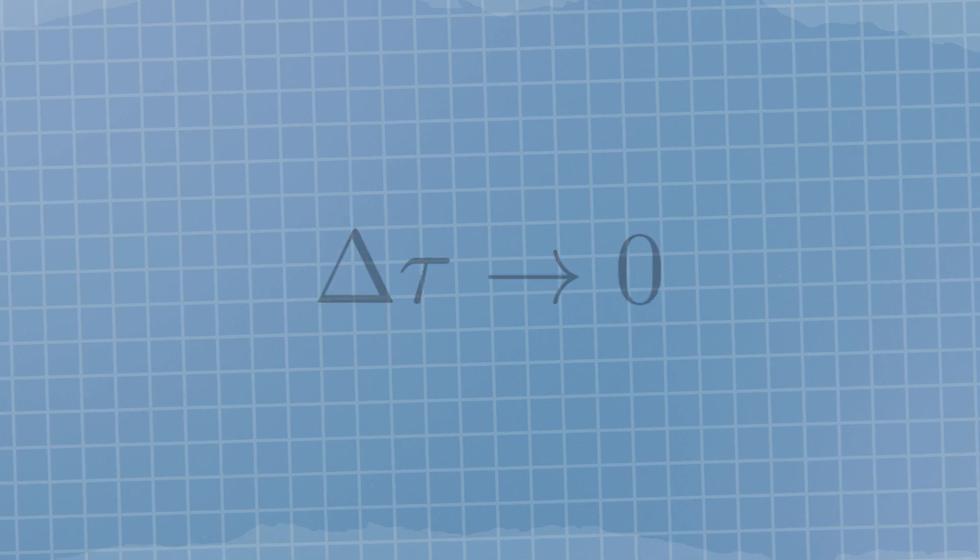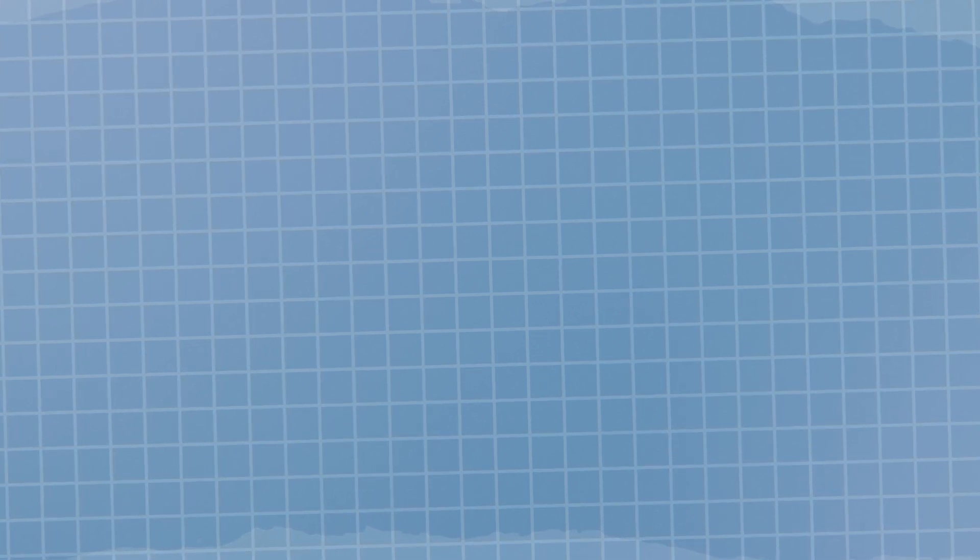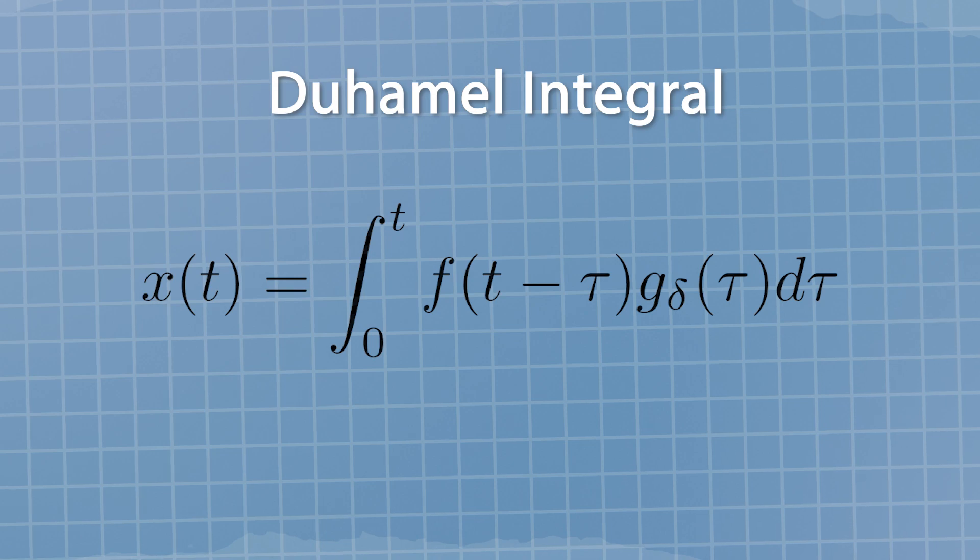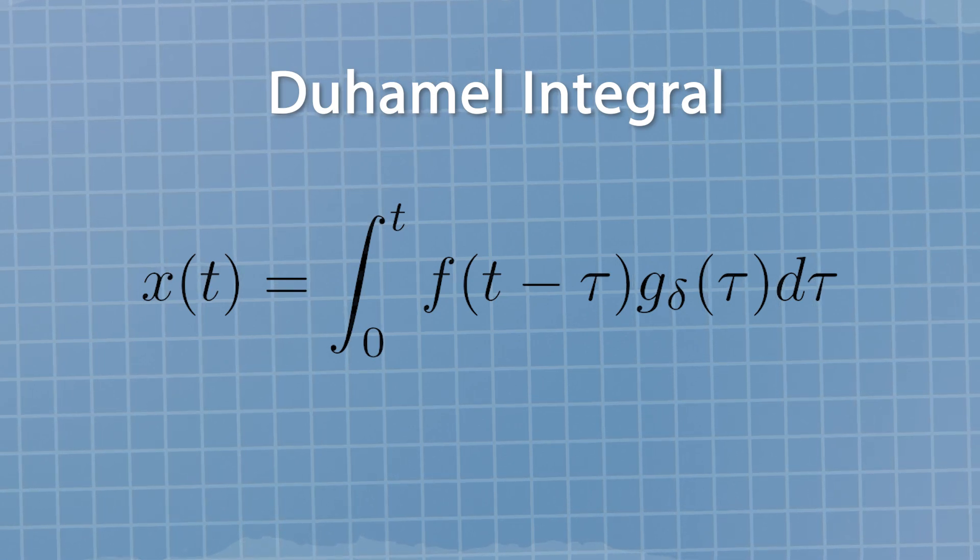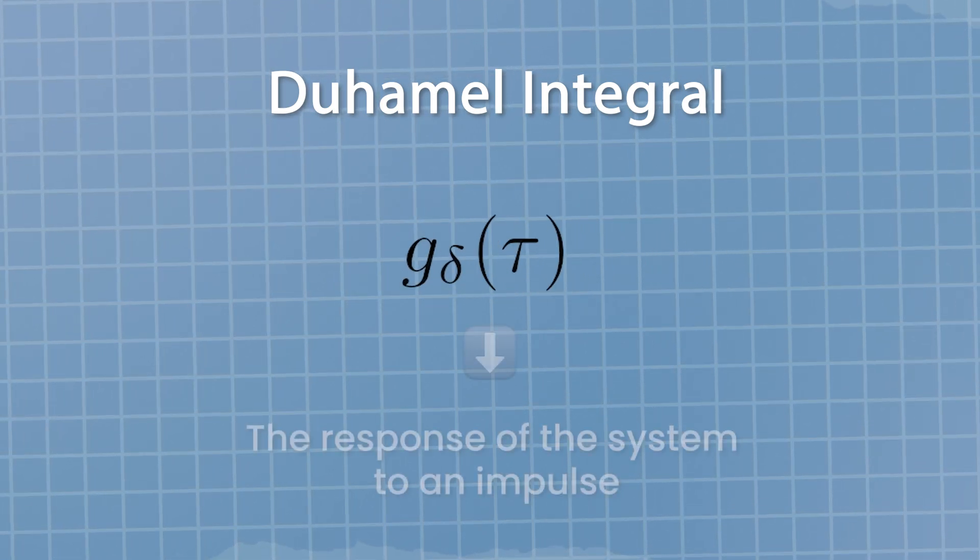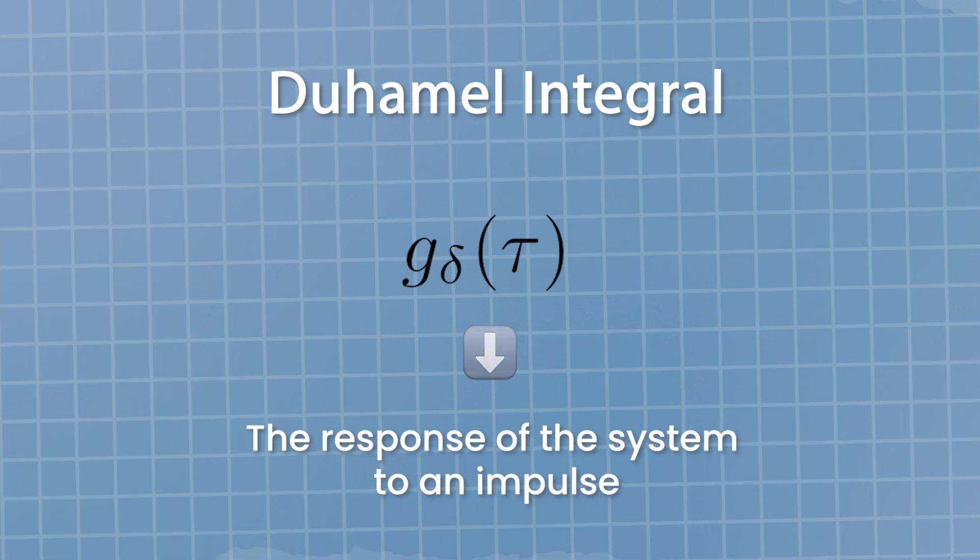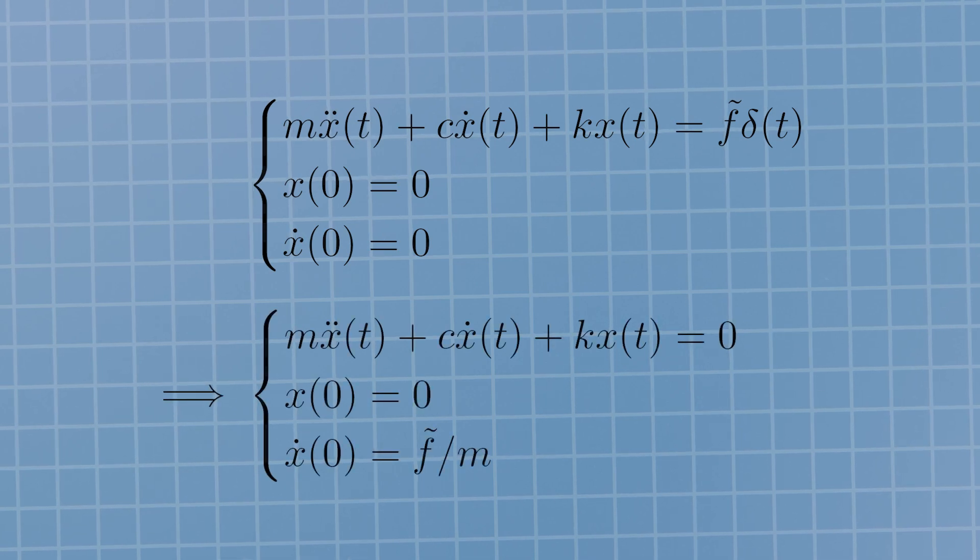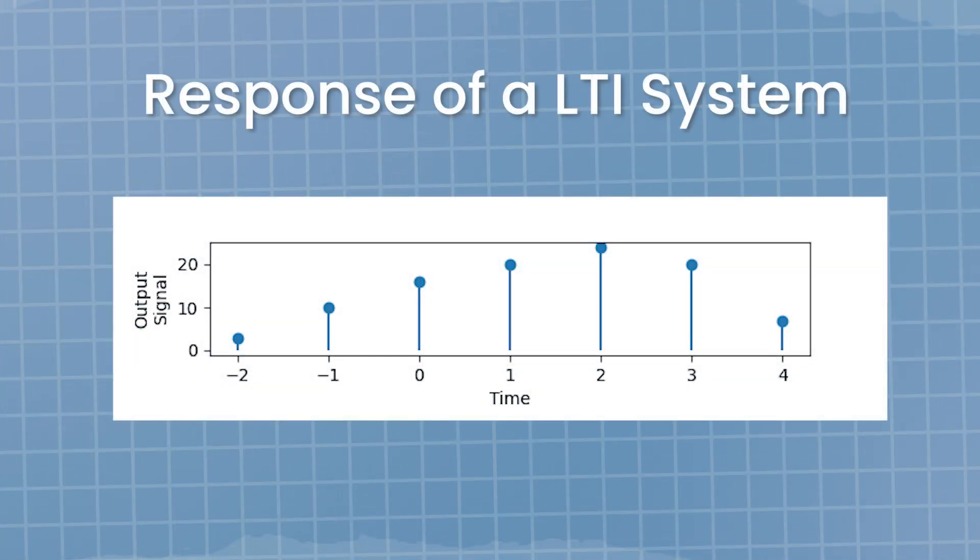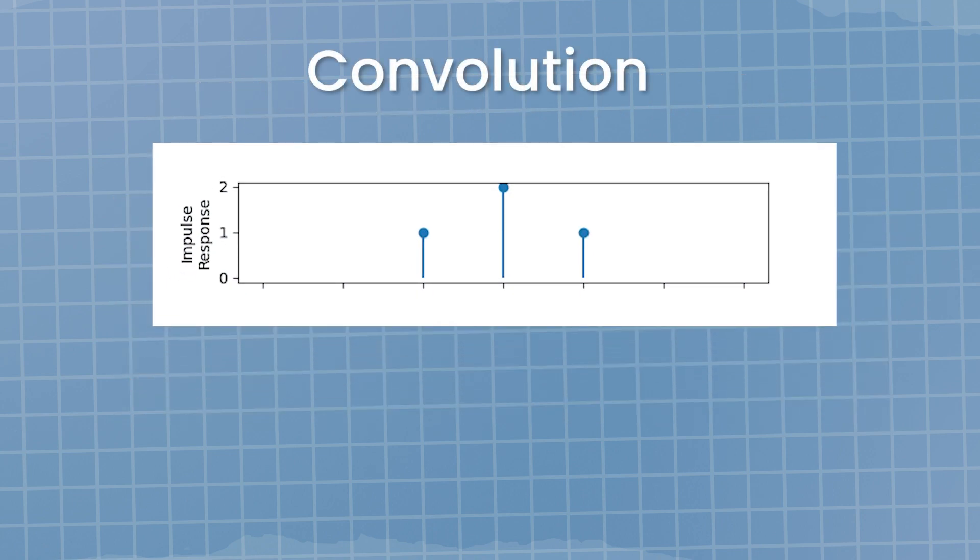Doing this, the response will now be an integral, the so-called Duhamel integral. The only thing missing is the kernel of the integral, the function g, that is the response of the system to an impulse. This is not hard to find. So the response of a linear time-invariant system can be found through the so-called convolution of its impulse response with the input. We now have all the necessary ingredients to better appreciate the parallels with other systems.